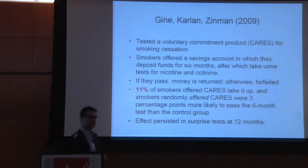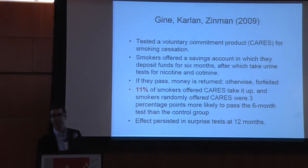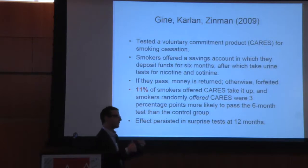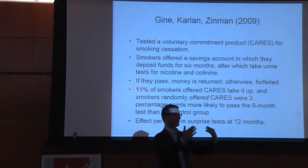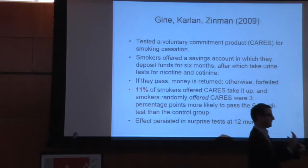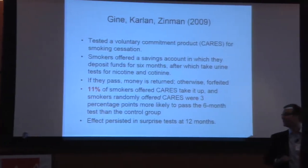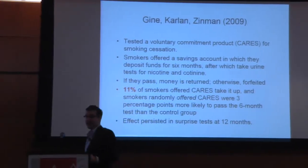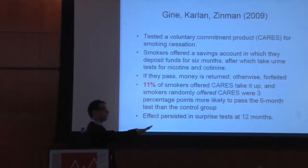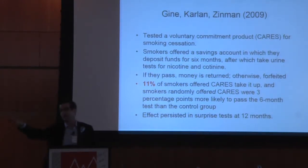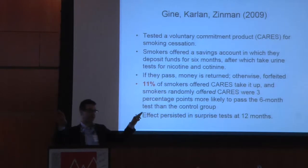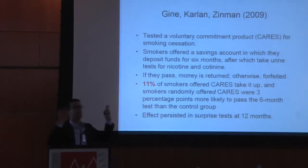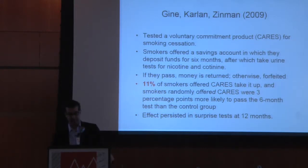There's also Janae, Carlin, and Zinman — Jonathan's paper here. They look at a voluntary commitment account to get people to quit smoking. You give the researchers your money, then you get tested for nicotine and cotinine at the end of the study period. If you're positive, you lose your cash. Smokers offered this product have an 11% take-up rate. And those who were just offered this product — intent to treat — have a three percentage point higher quit rate, sustained at a 12-month follow-up.